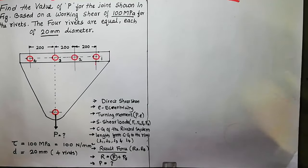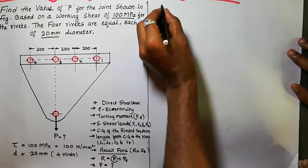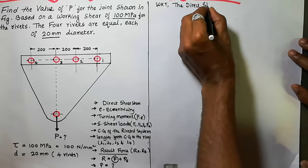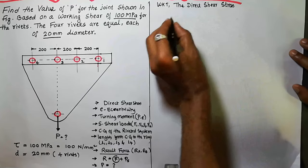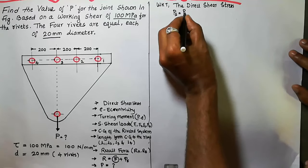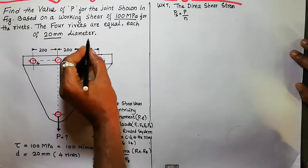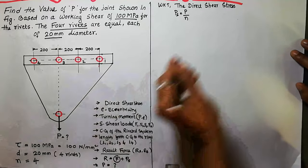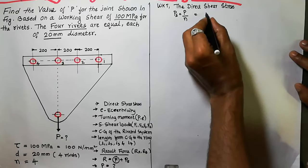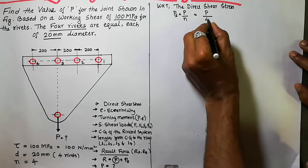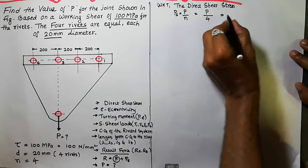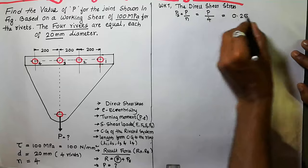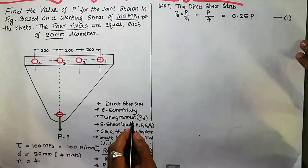First, we will calculate the direct shear stress. The given data: shear stress τ = 100 MPa = 100 N/mm², diameter d = 20 mm, and number of rivets n = 4. The direct shear load Ps = P divided by N = P/4 = 0.25P. This is equation number 1.